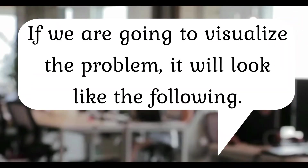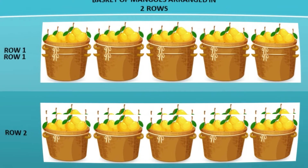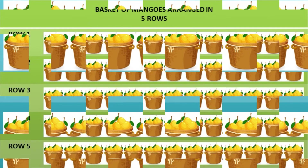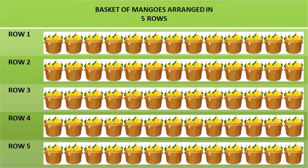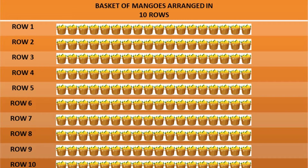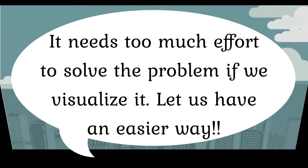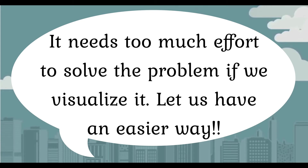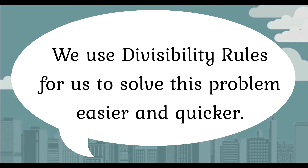If we are going to visualize the problem, it will look like the following: baskets in 2 rows, baskets in 5 rows, and baskets in 10 rows. It needs too much effort to solve the problem if we visualize it, so let us have an easier way. We use Divisibility Rules to solve this problem easier and quicker.